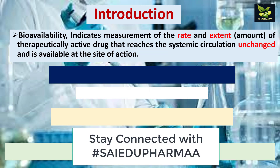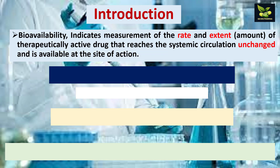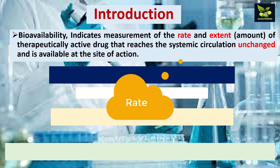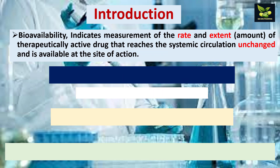Here you have to remember two words: how much amount is reaching the blood or systemic circulation, and in what time — that is rate. They say 'unchanged drug' because when the drug goes into systemic circulation it is metabolized, and some of the drug binds with protein. When the drug is bound with protein, that drug is also not available for action.